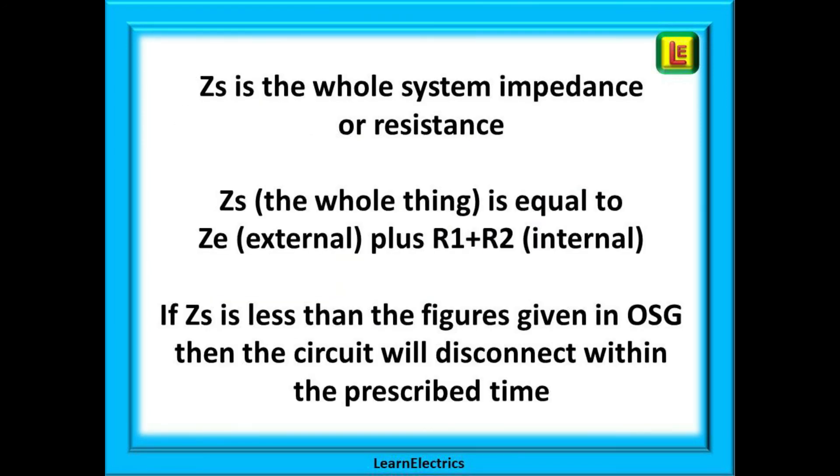To sum up, ZS is the whole system impedance. It is made up of two parts: ZE, the part that is external to the installation, and R1 plus R2, the internal part of the installation. ZS, the whole thing, is equal to ZE, the external part, plus R1 plus R2, the internal part.